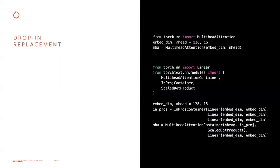Here I give you an example of how you switch from the PyTorch multi-head attention to our TorchText multi-head attention container. Just with these few lines, users have more flexibility to try different custom components — you can put in a custom in-projection, a custom multi-head attention container, or scaled dot-product. You can apply different ideas with this multi-head attention container.